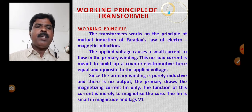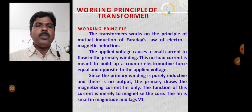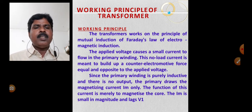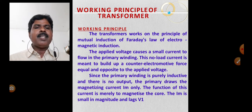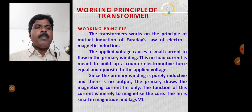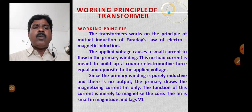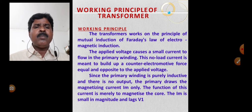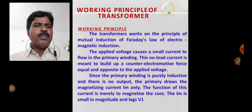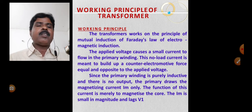Since the primary winding is purely inductive and there is no output, the primary draws the magnetizing current, shortly called IM. The magnetizing current IM only — the function of this current is merely to magnetize the core.